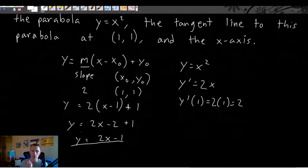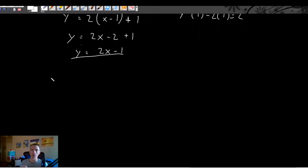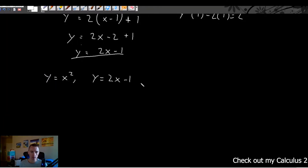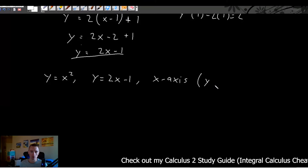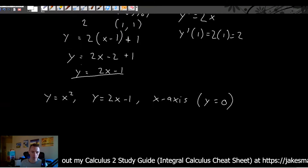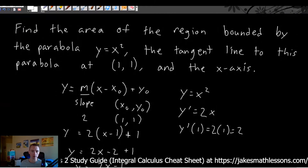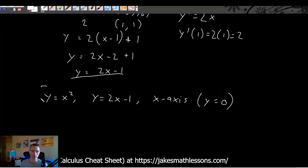Now we've completed the first half of the problem. What we need to do now is treat it as a separate area problem: find the area between the curves y equals x squared, y equals 2x minus 1, and the x-axis. The x-axis is the same as y equals zero. So essentially, we're finding the area of the region bounded by these three functions.